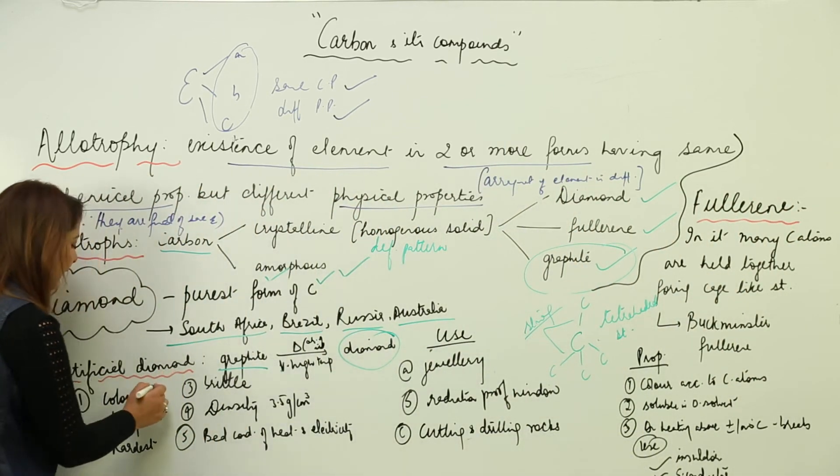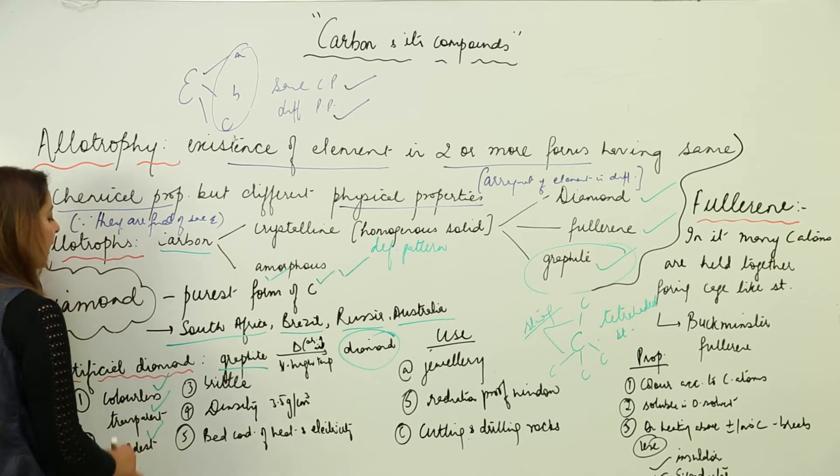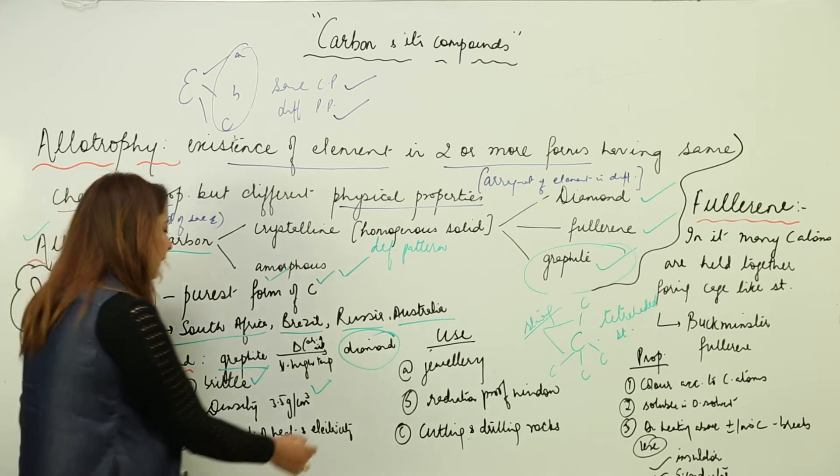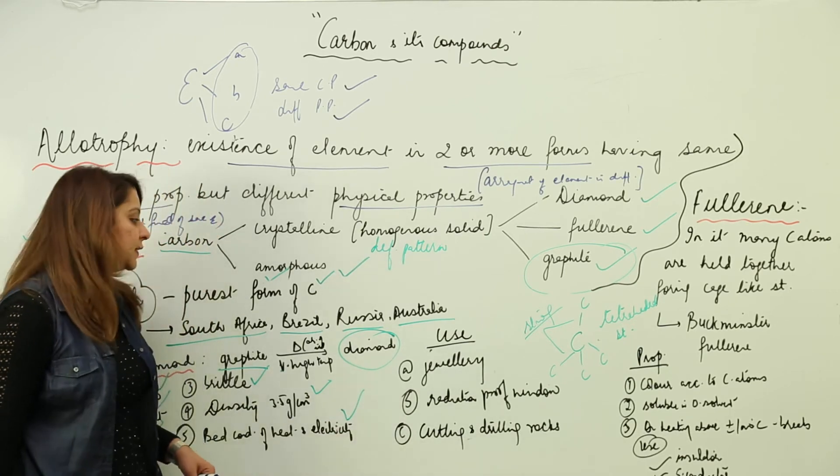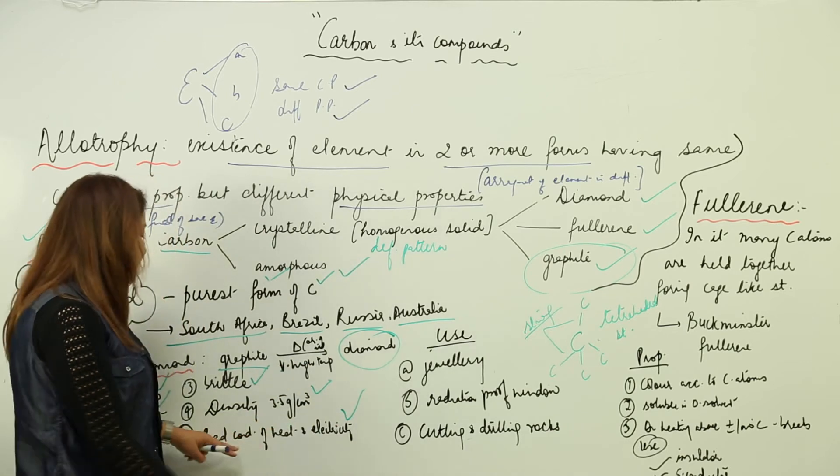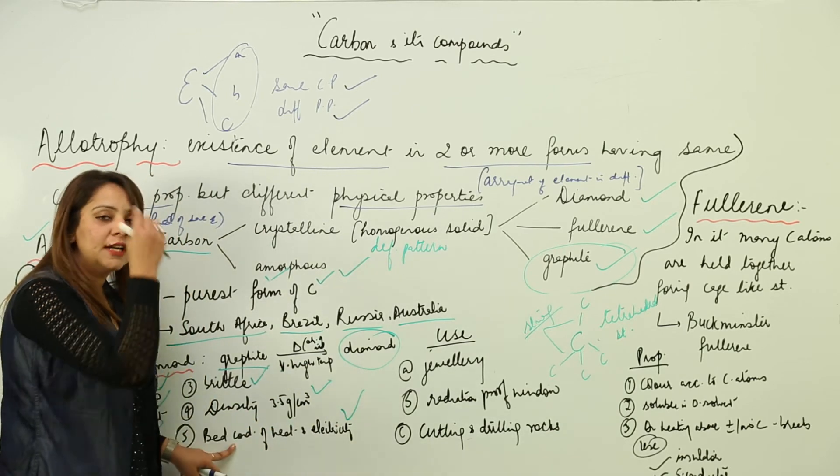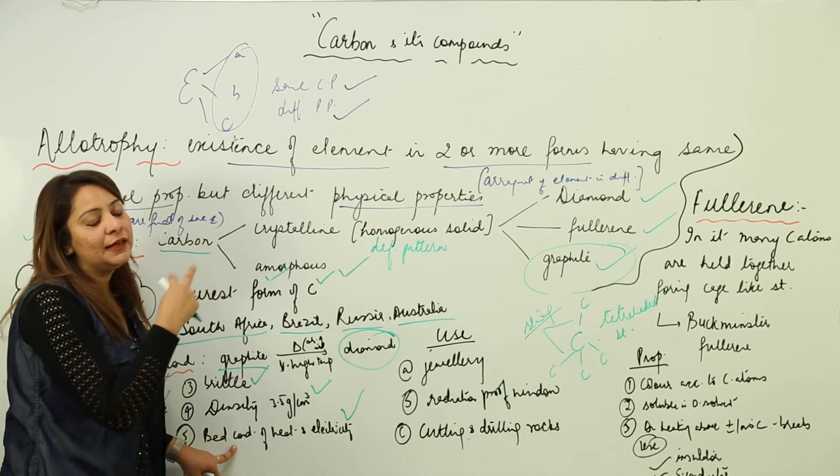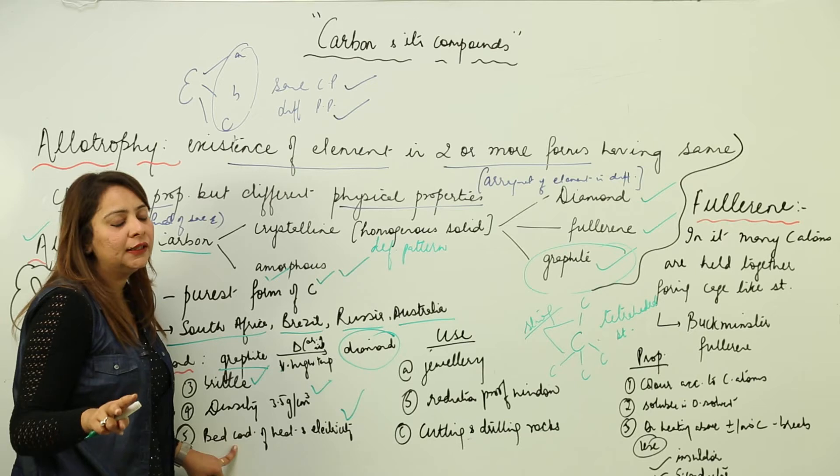Looking at the properties: it is colorless, transparent, the hardest, brittle, with density 3.5 grams per cubic centimeter, and a bad conductor of heat and electricity. The reason is that there are no free electrons, whereas graphite was a good conductor.